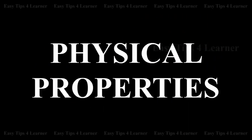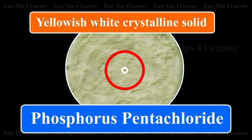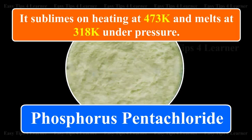Physical Properties. Phosphorus pentachloride is a yellowish-white crystalline solid. It sublimes on heating at 473 Kelvin and melts at 318 Kelvin under pressure.